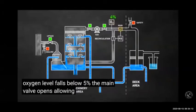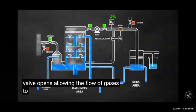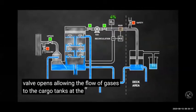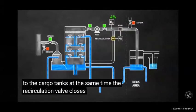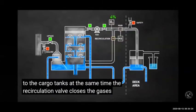There is also a recirculation line. If oxygen is more than the limit, the gas is recirculated. When oxygen is less than 5%, it proceeds to the deck seal and then to the tank.